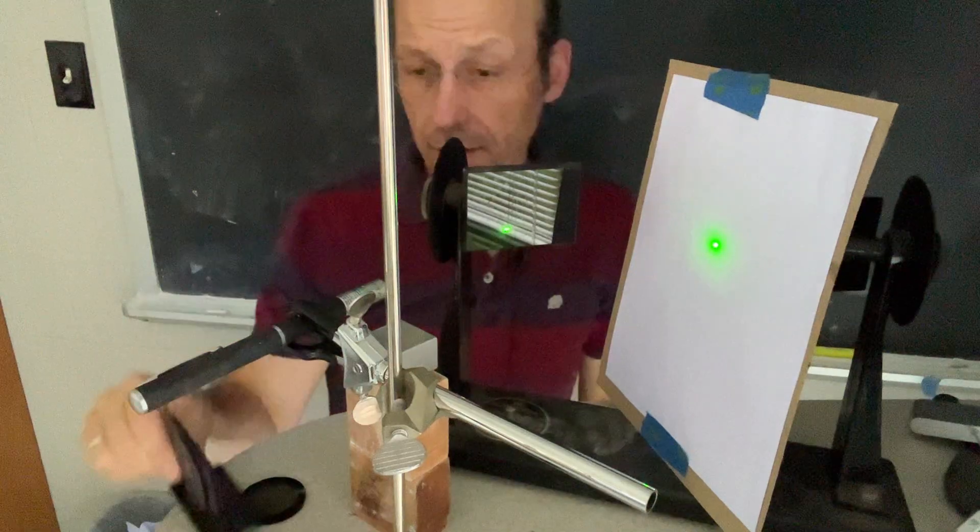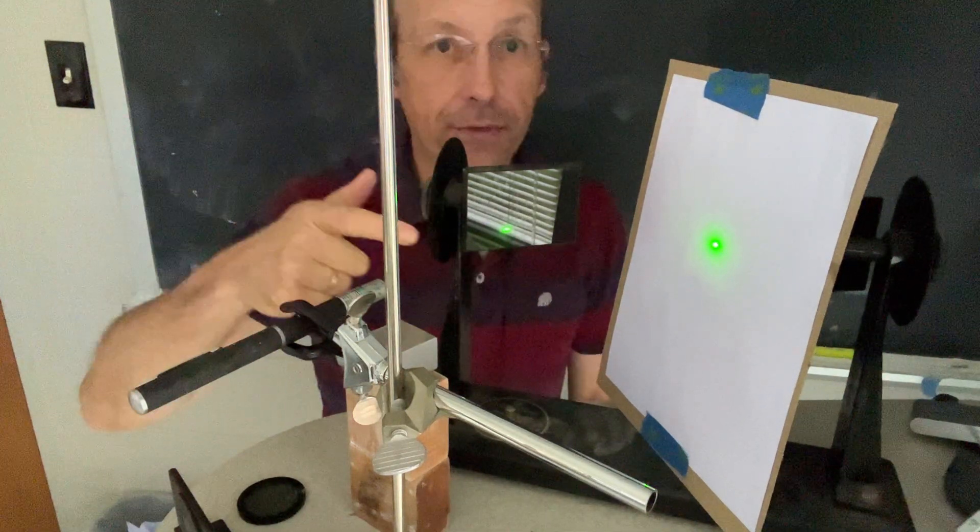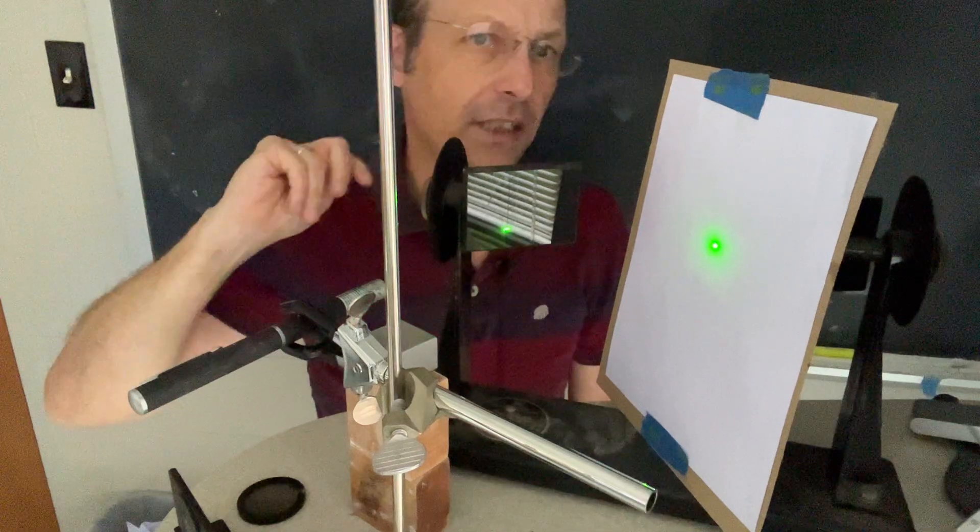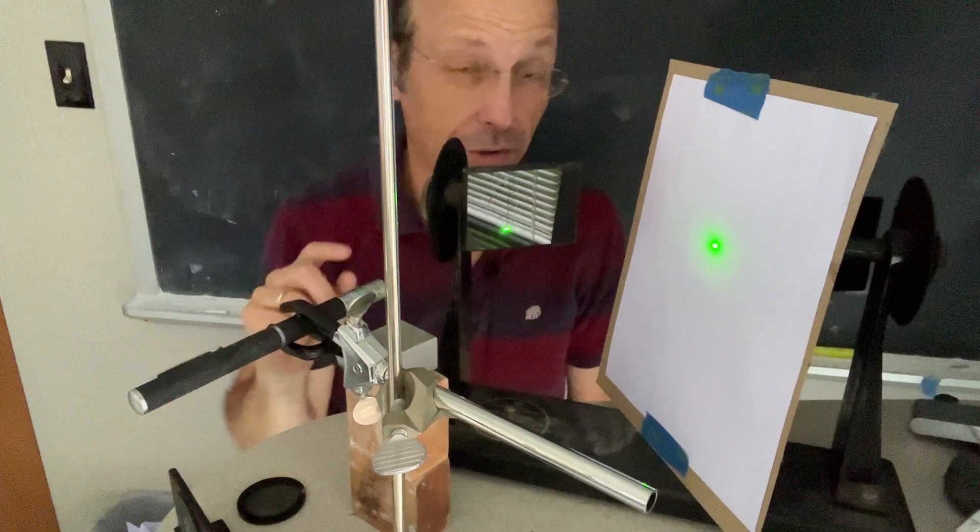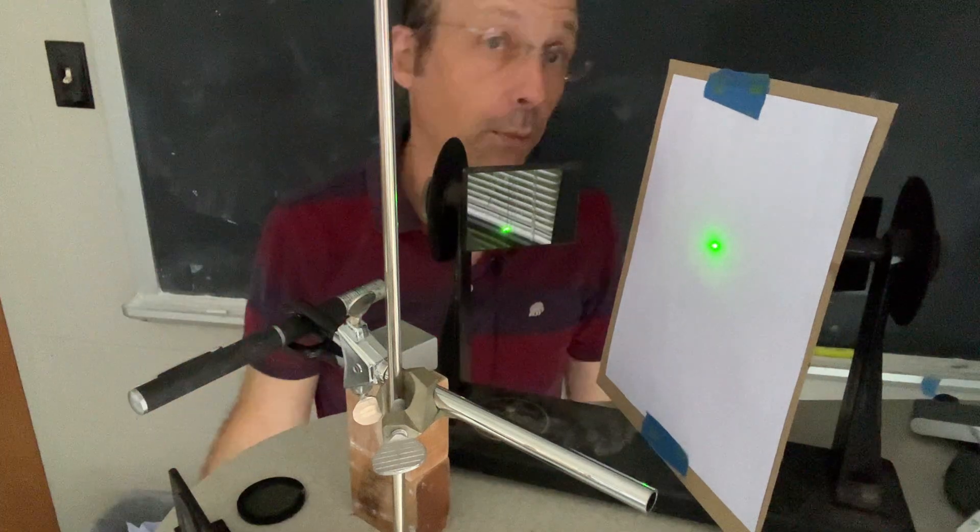I have right here a green laser pointer and that green laser pointer comes down here and hits this piece of glass. I'll show you this in just a second after I take the whole thing apart because it's actually pretty cool too. And then that light reflects off the glass and onto this little screen and we get a dot.